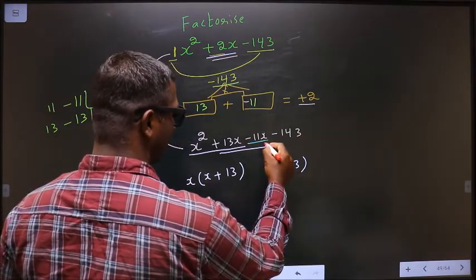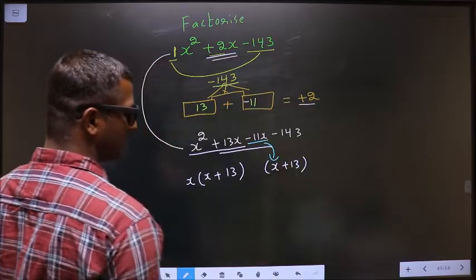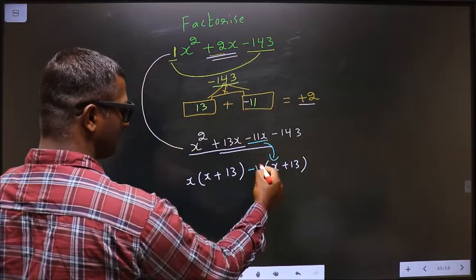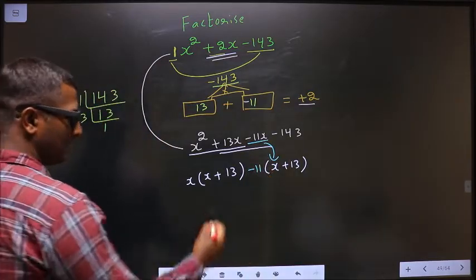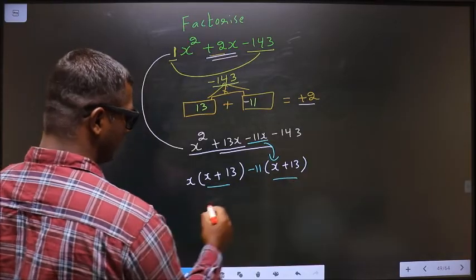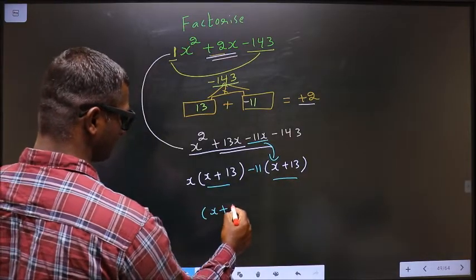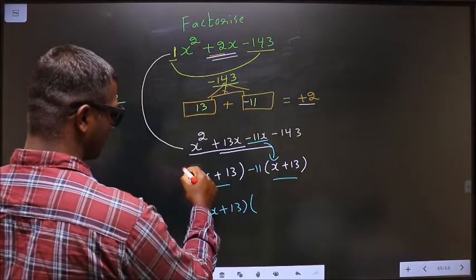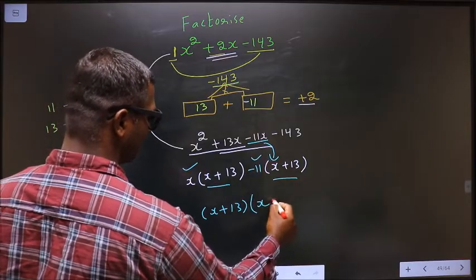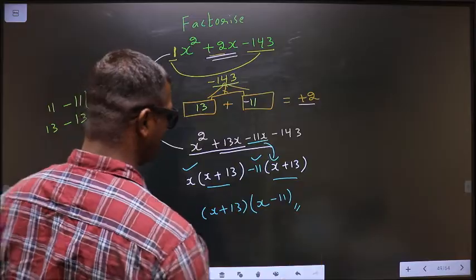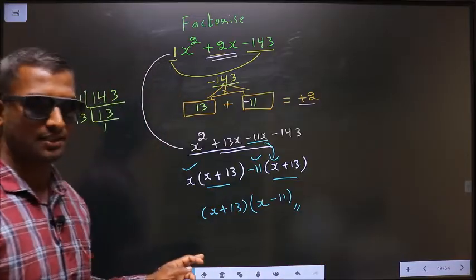Now from minus 11x, x has gone inside, so outside left is minus 11. Now take out x plus 13 common. So here I have x and here I have minus 11. This is the answer.